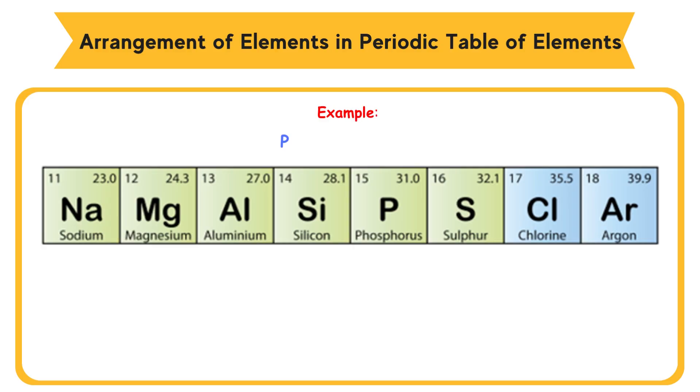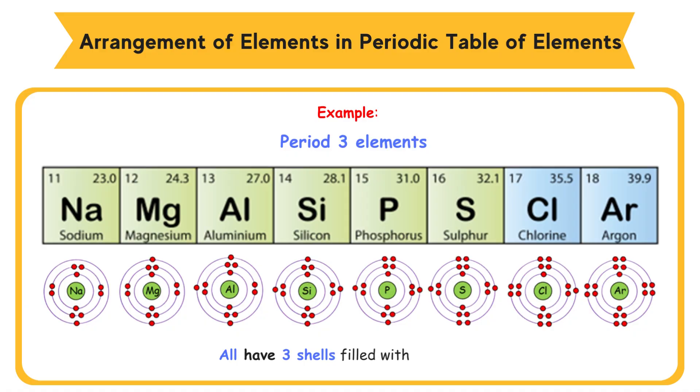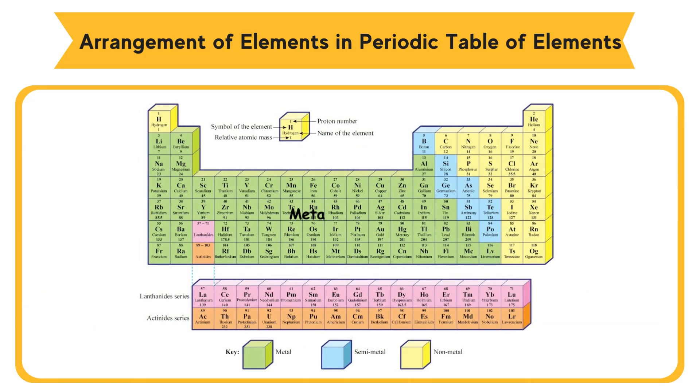Example: Period 3 elements all have 3 shells filled with electrons. Metallic elements are located at the left while non-metallic elements are located at the right of the periodic table. The metallic properties of elements change gradually from metal to metalloid semi-metal and then non-metal when moving across the period.